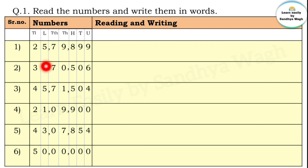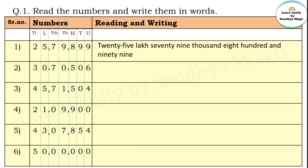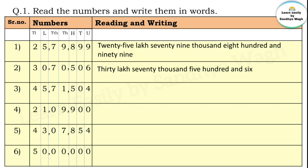With commas placed according to periods, let's read the numbers. The first number is 25 lakh 79 thousand 899. Let's write: twenty-five lakh seventy-nine thousand eight hundred and ninety-nine. Next number: 30 lakh 70 thousand 506. Let's write: thirty lakh seventy thousand five hundred and six.